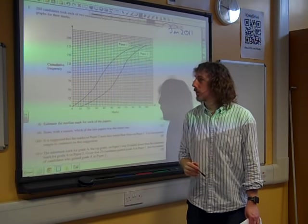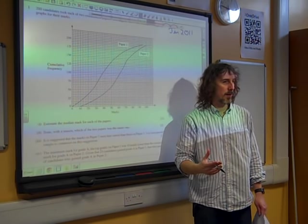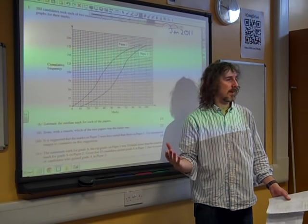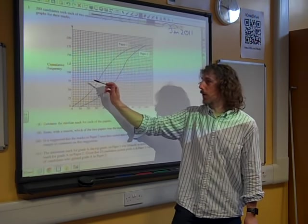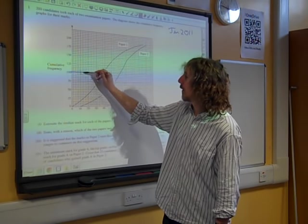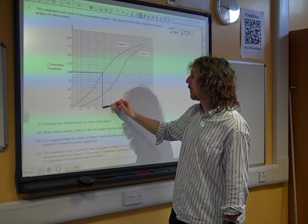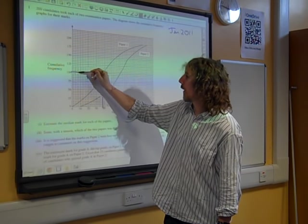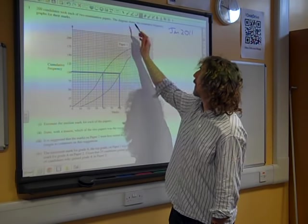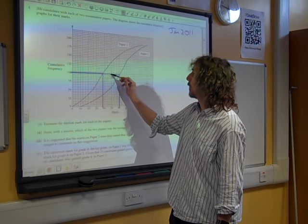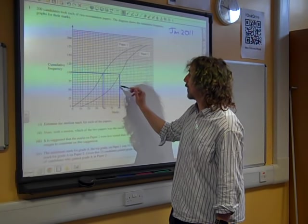And it will annoy your maths teacher if you do this, because the paper won't be able to be used for future classes. But on your exam paper, in the exam room, you put your ruler on the exam paper, and you draw a line across from 100 to where it meets the two lines. And then you draw a line down, and read off your figure that way. So, I've not got my lines particularly exact down, but how does that look?